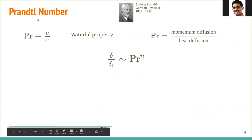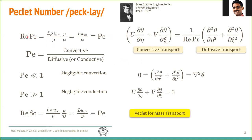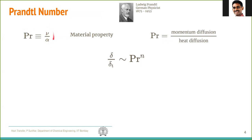The next number is the Prandtl number, named after German physicist Ludwig Prandtl. Prandtl number is the ratio ν/α — kinematic viscosity to thermal diffusivity. Notice that both are material properties. Unlike Reynolds number or Péclet number, which include velocity and geometry (flow parameters), Prandtl number is purely a material property: simply the ratio of kinematic viscosity to thermal diffusivity.